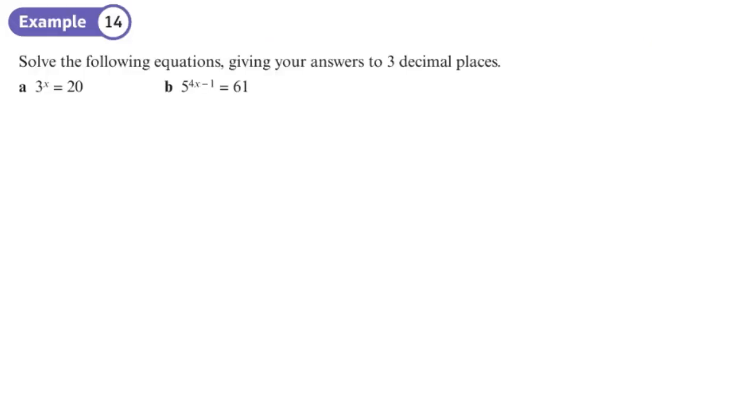Now we're going to write these as logs to solve these. So now we can solve these questions where you've got powers because we've been writing it as a log. So this will be log to the base 3 of 20 equals x. So it's just a matter now of doing that on our calculator. So log base 3, 20 and answer to three decimal places it's going to be 2.727. That's 3 dp.